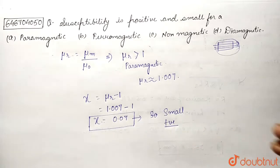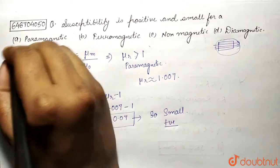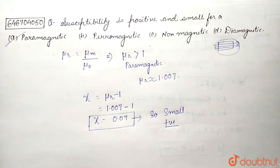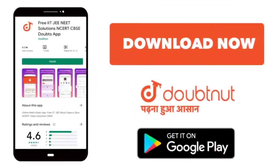So here in this question, susceptibility is positive and small for, of course option A is correct for paramagnetic material. I hope you understood. Thank you. For class 6 to 12th, IIT-JEE and NEET level, trusted by more than 5 crore students, download Doubtnut app today.